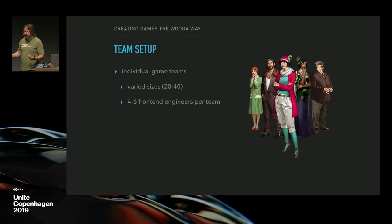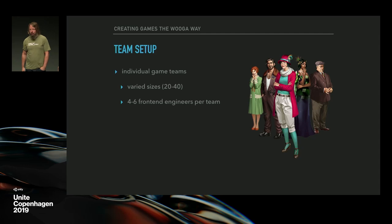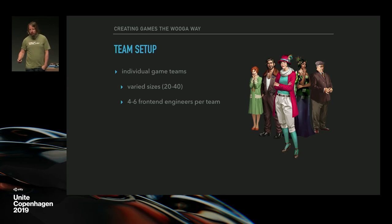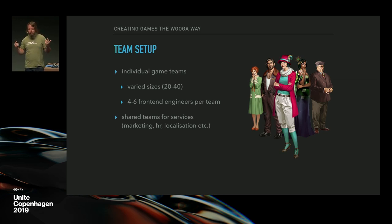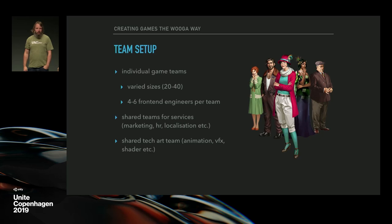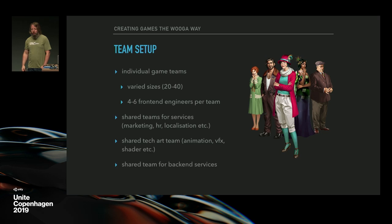How are we set up? We have individual game teams — every game has its own team. Team sizes vary; currently it's between 20 and 40 people, with usually four to six front-end Unity engineers per game. On top of that we have shared teams for services like marketing, HR, and localization. We have a shared tech art team for visual effects and animation, shared between game teams. And we have a shared backend team used by all our games.